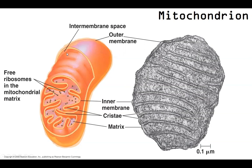The intermembrane space is a very general-sounding name for a space with a very specific purpose. When we start talking about cellular respiration in chapter nine, we're going to spend a lot of time in this intermembrane space — it's critical for the function of our mitochondria.